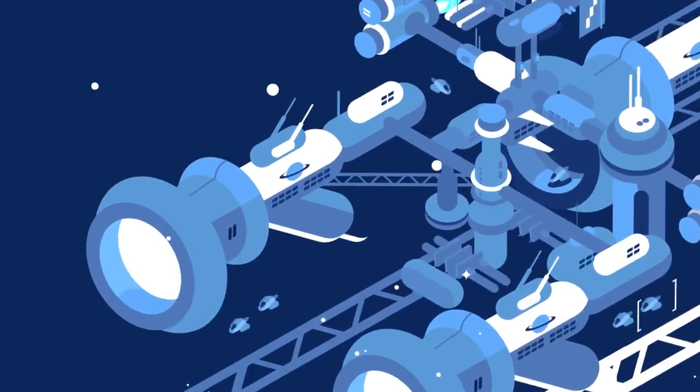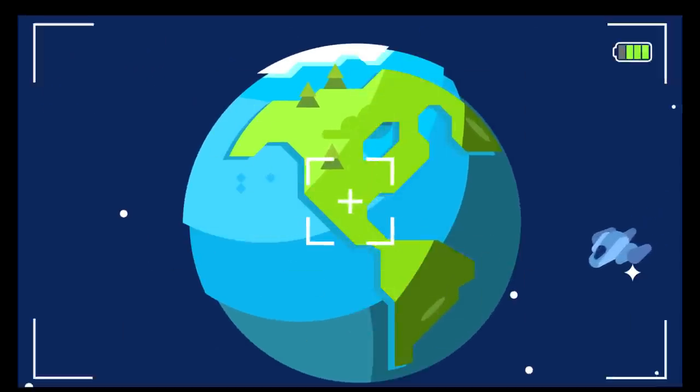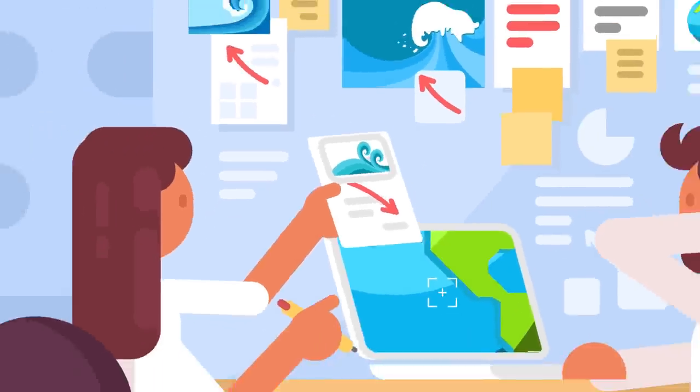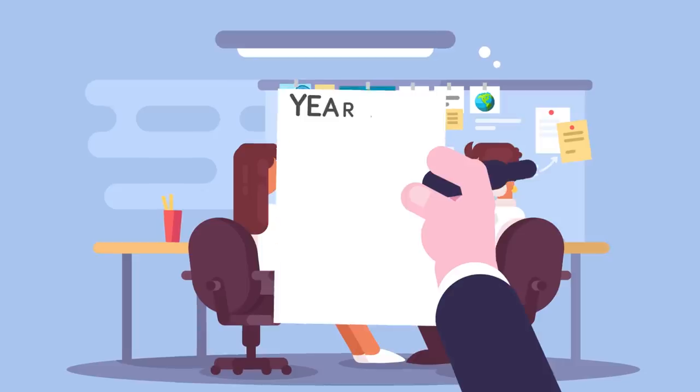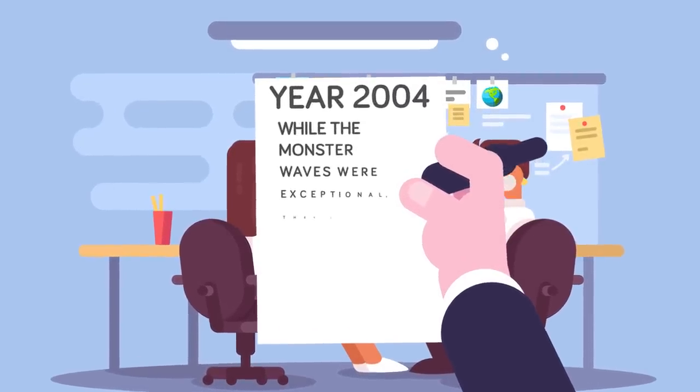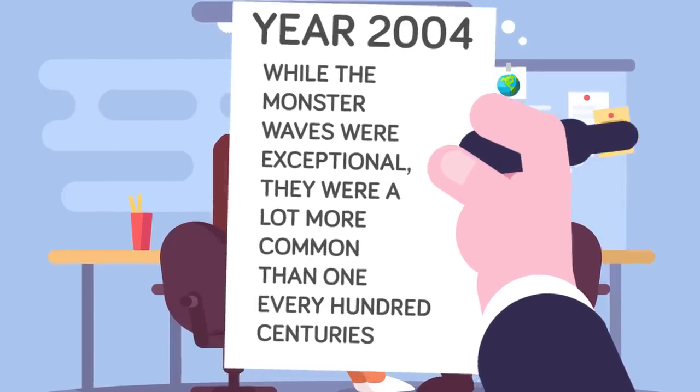The European Space Agency scrutinized 30,000 satellite images looking at 18 square mile blocks of ocean over the course of three weeks in 2001. In that time span, they discovered 10 rogue waves of 82 feet or higher, some as high as 100 feet. Their report, released in 2004, showed that while monster waves were exceptional, they were a lot more common than one in every hundred centuries.